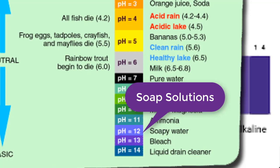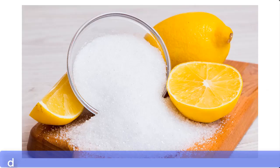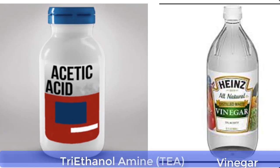However, if you plan to use the liquid soap for cleaning around your home, having a highly alkaline soap is not a problem. In fact, it may even work to your advantage to a certain extent, as highly alkaline and highly acidic soap products can be great cleansers. You can use substances like citric acid, acetic acid or vinegar, and triethanolamine (TEA) to neutralize the pH of your liquid soap.